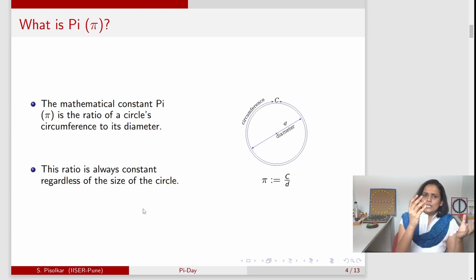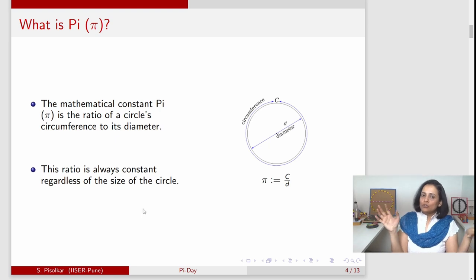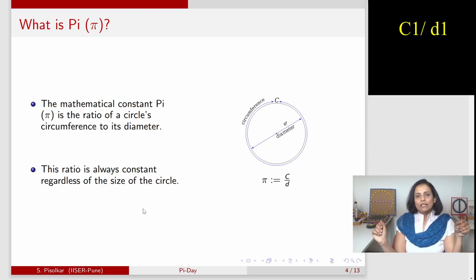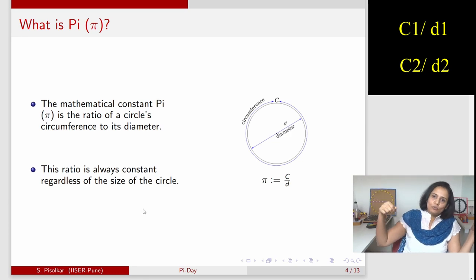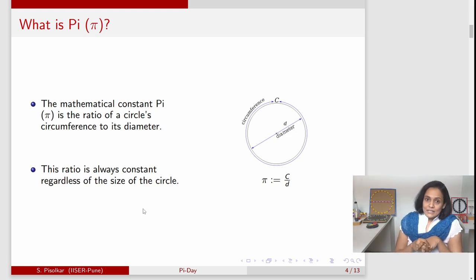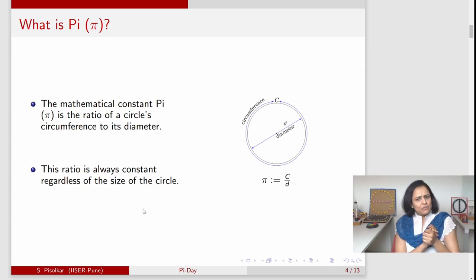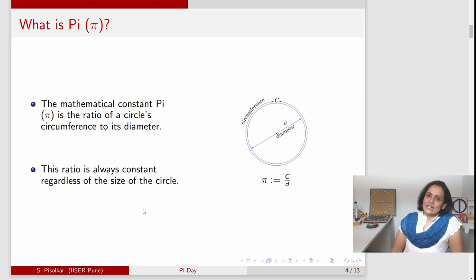Now the question is, if I give you two circles of various sizes, their circumference will change, their diameters will change, and you'll have these two ratios: C1 by D1 and C2 by D2. Will these two ratios be the same? Apparently that is the case. The two ratios will be very close to each other. But why should you believe this? Let's try to work out some experiments.